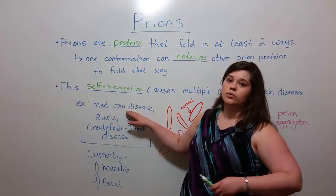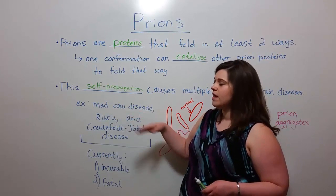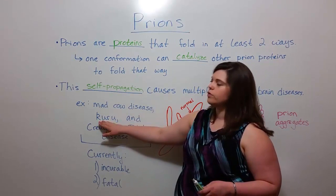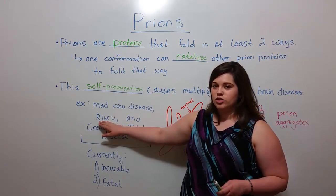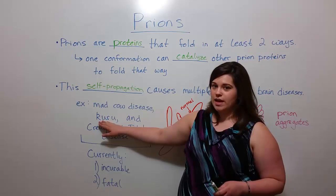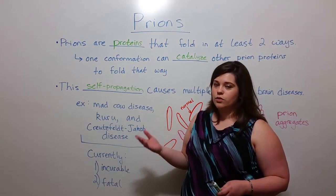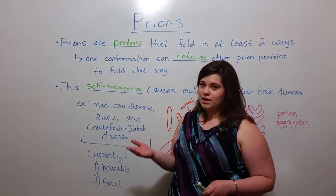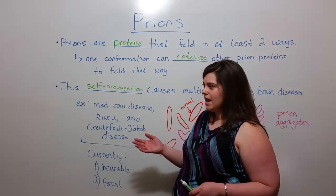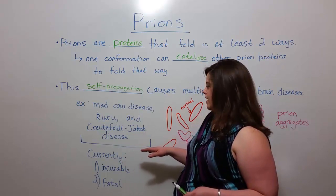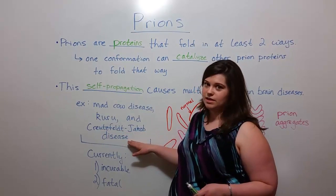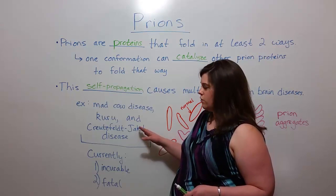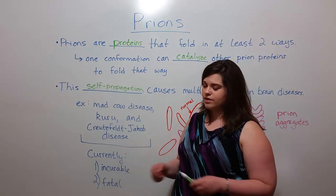There's mad cow disease, which you've probably heard of — it's typically linked with contaminated beef products. There's also kuru, a prion disease found in certain remote tribes of Papua New Guinea who practice funerary cannibalism; they eat the brains of dead tribal members and can get prion protein from those brains. And there's also Creutzfeldt-Jakob disease, which is sometimes genetic and is other times transmitted from person to person by way of brain grafts.